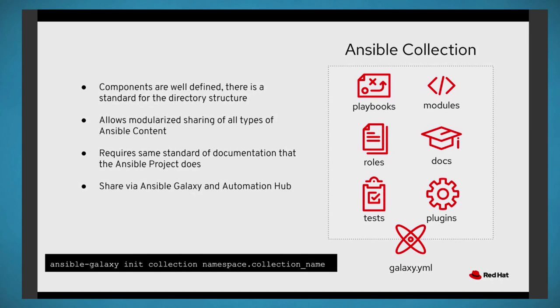The galaxy.yml file determines the versioning and creating that particular collection and publishing it — important for both Galaxy and Hub, and there are directions on how to create those files. When you run `ansible-galaxy collection init` on the command line with Ansible 2.9 or later, you give it two parameters with a dot between them: the namespace and the collection name. So you'd have something like `cisco.ios` or `namespace.collection`. You can have multiple collections within a namespace, and a collection is encouraged to contain multiple roles.